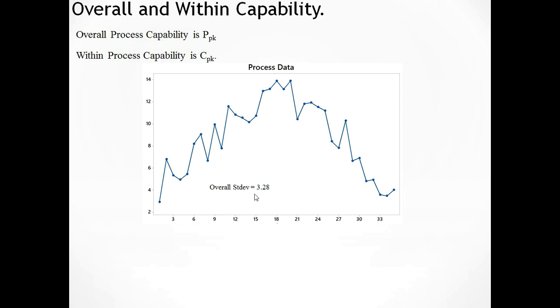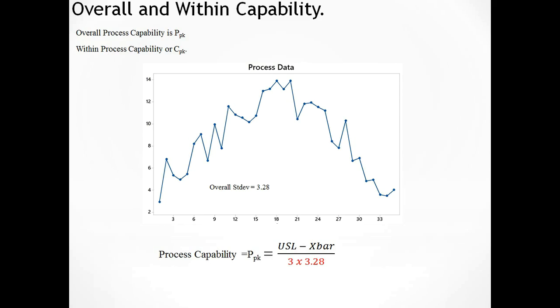So here's my process data. And I can work out the overall standard deviation for that data as 3.28. Now if I work out my process capability PPK for that data, forget the voice of the customer at the top. Let's just say that's going to be the same. And just look at the voice of the process. So we have 3 times 3.28. So the denominator there is going to be close to 10 for the PPK.